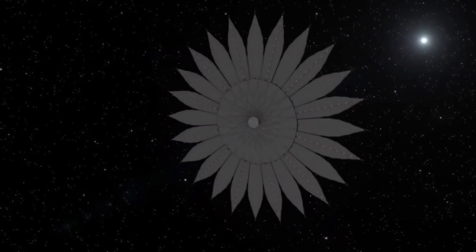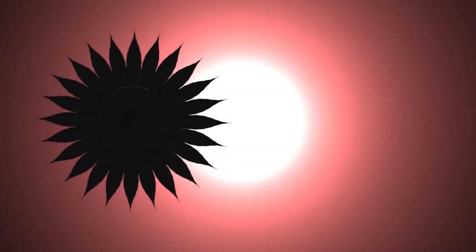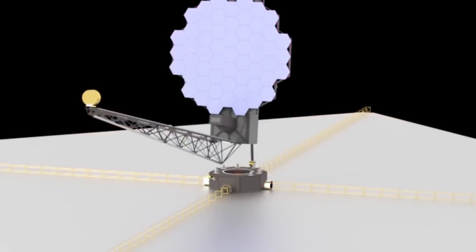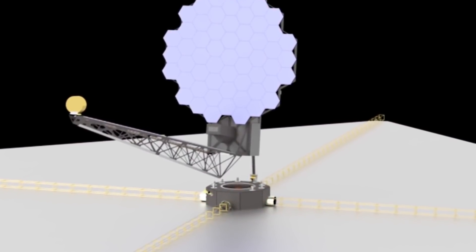LUVOIR-B would be equipped with an internal coronagraph instrument called Eclipse for Extreme Coronagraph for Living Planetary Systems to enable direct observations of Earth-like exoplanets. An external star shader is also an option for the smaller LUVOIR design.